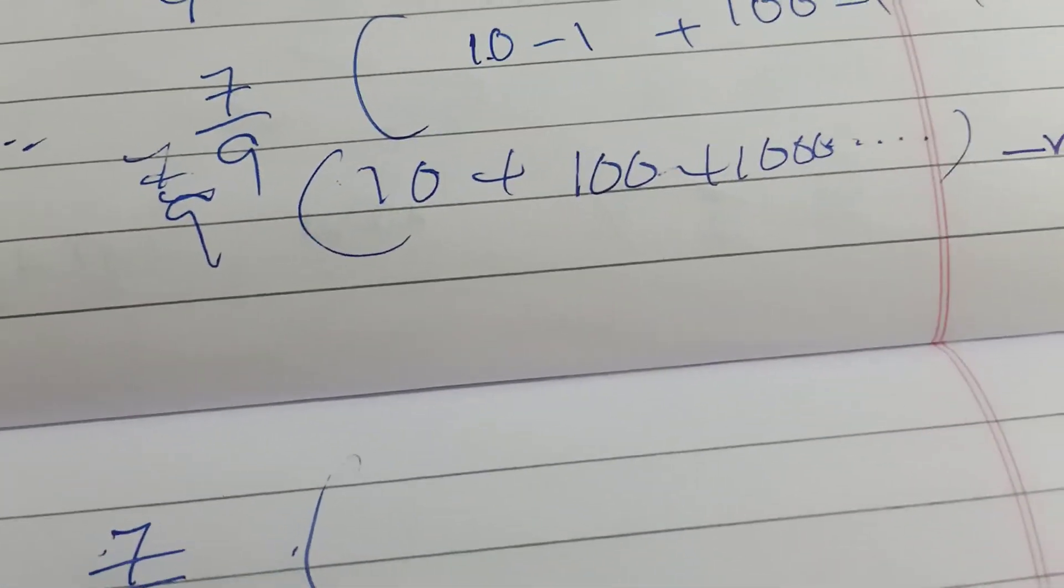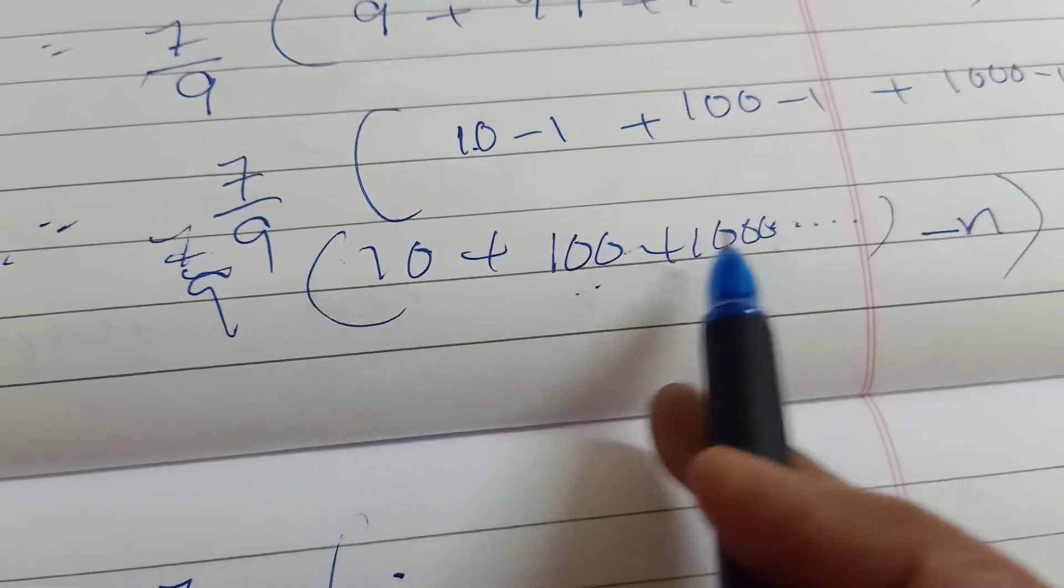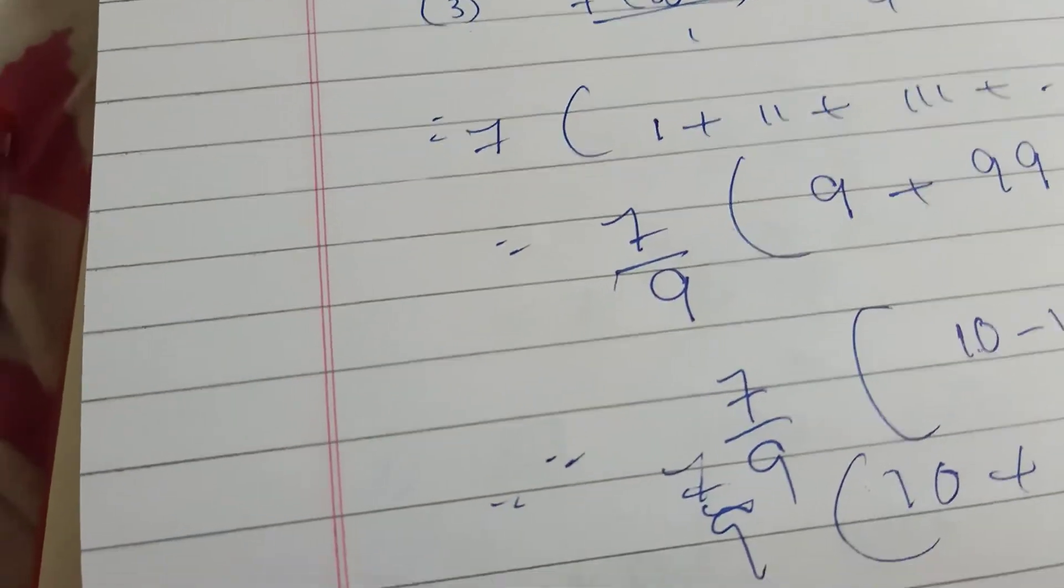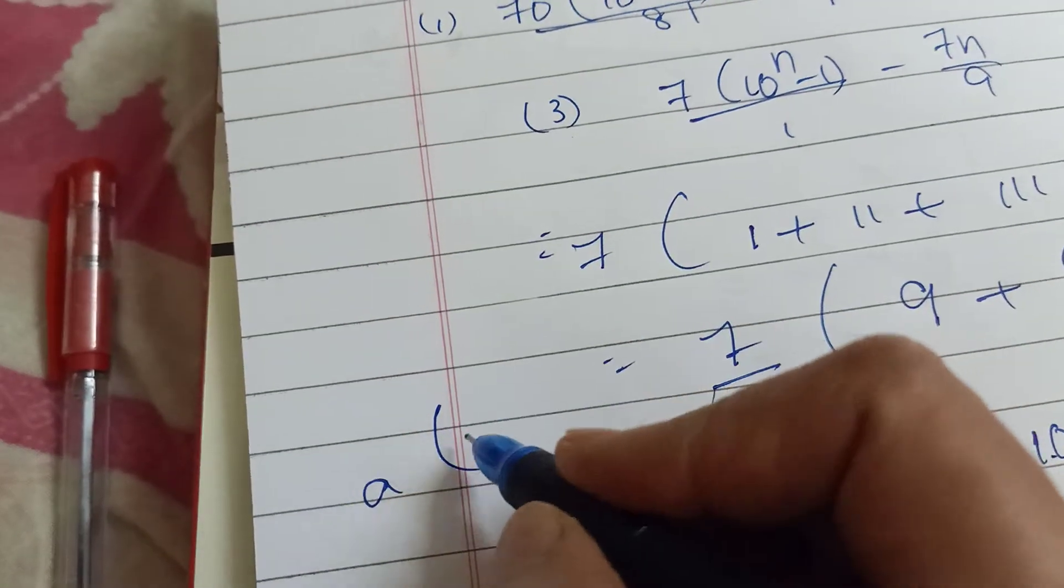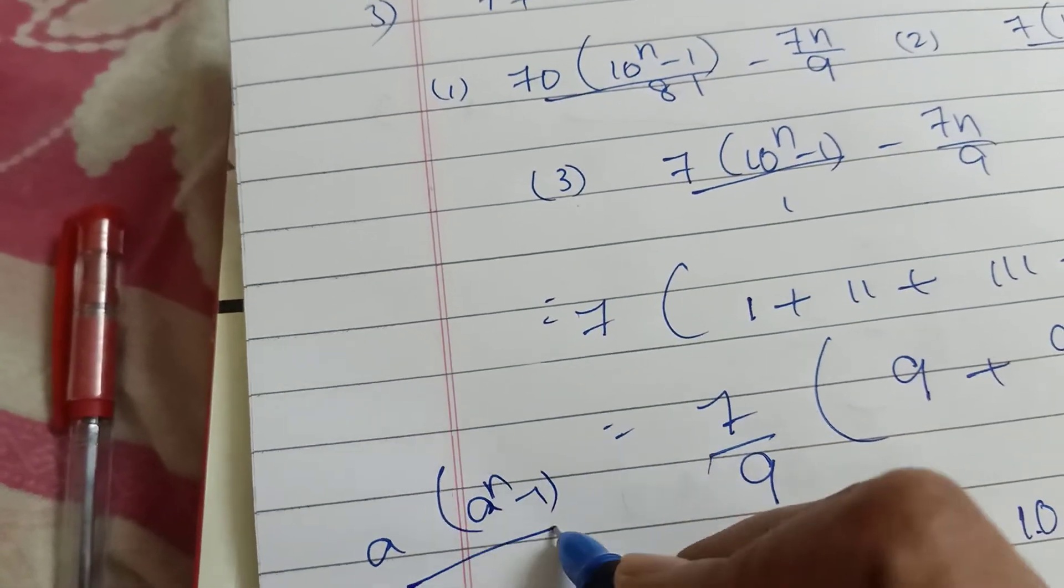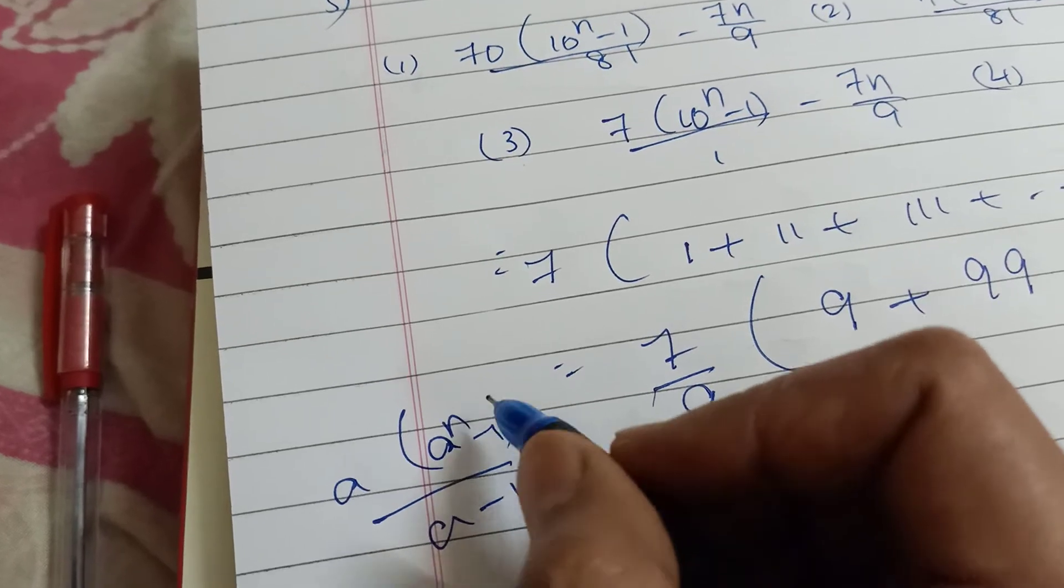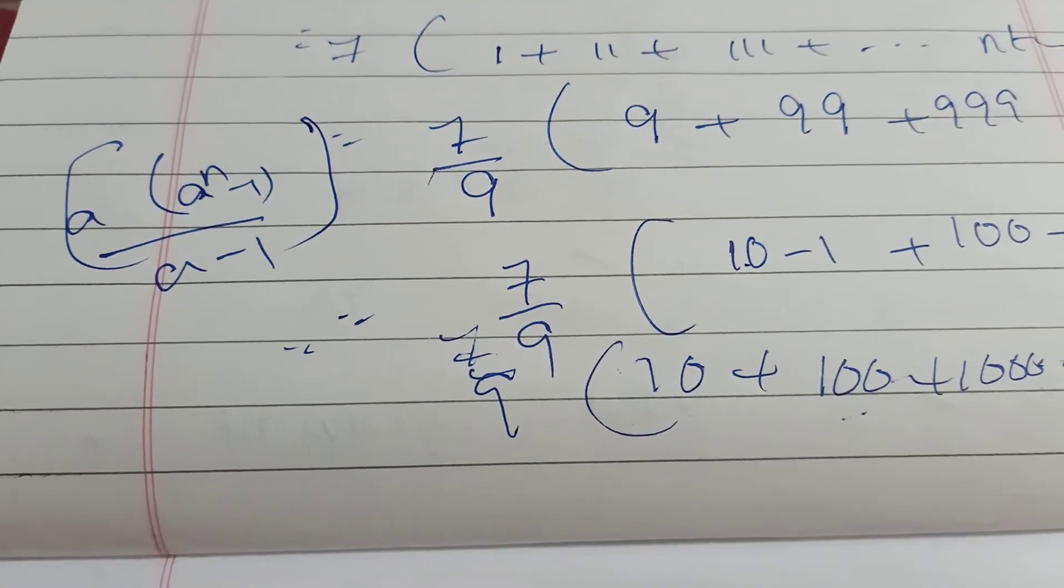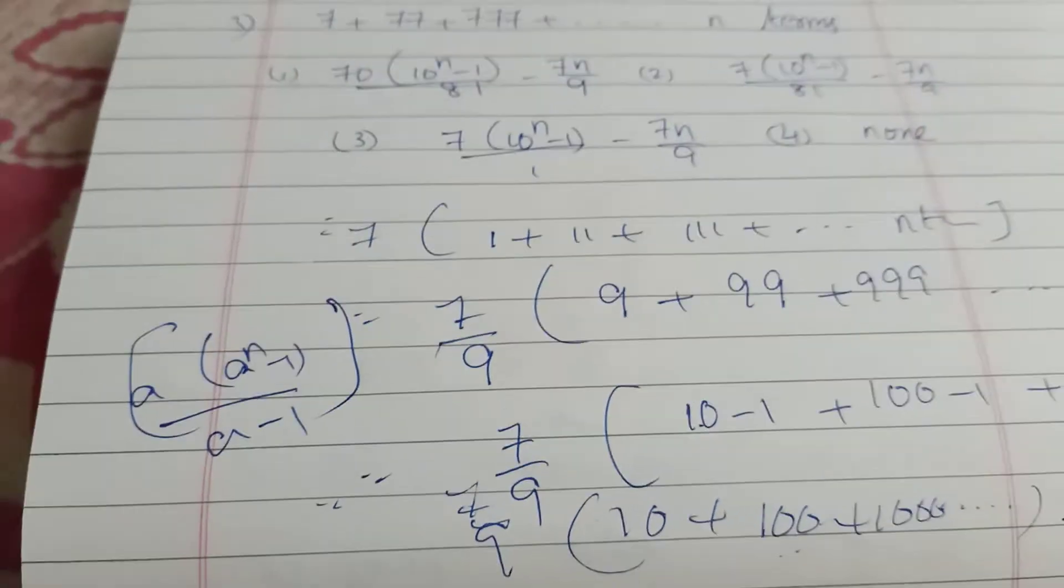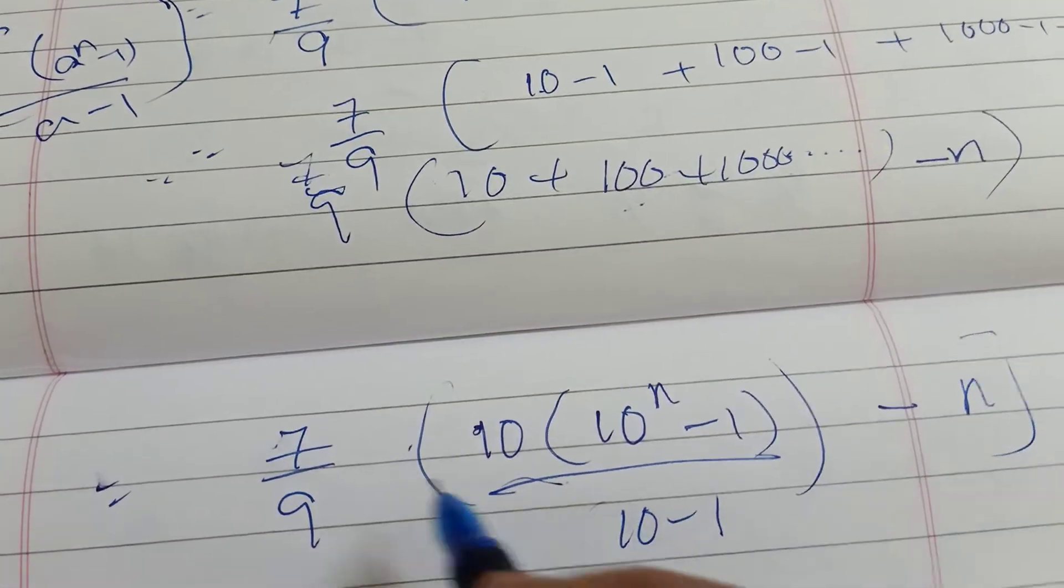The series 10, 100, 1000 is a geometric series: 10, 10 squared, 10 cubed, and so on. For a GP series, the formula is a into (r to the power n minus 1) divided by (r minus 1). Here, a is 10, so we have 10 into (10 to the power n minus 1) divided by (10 minus 1), minus n terms.